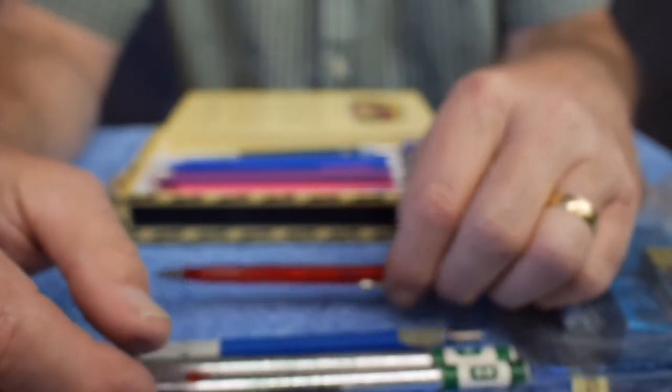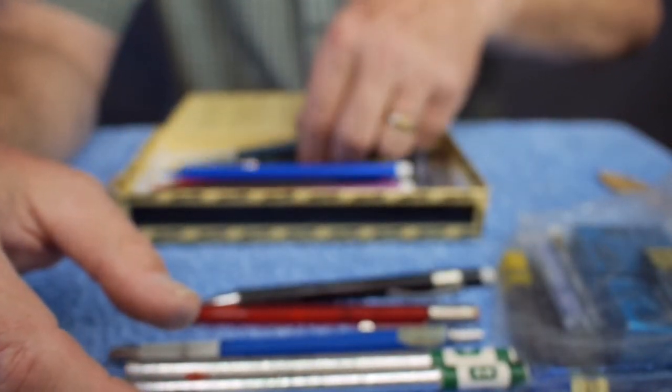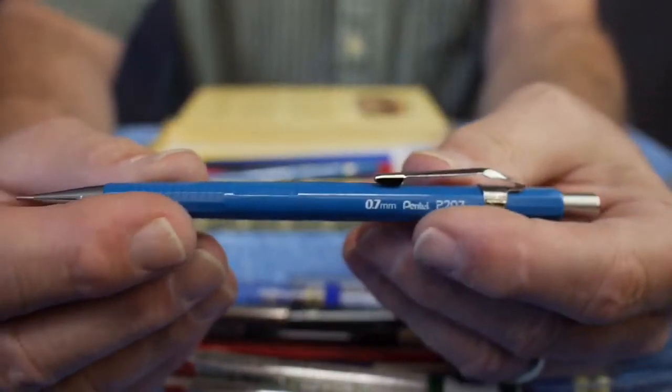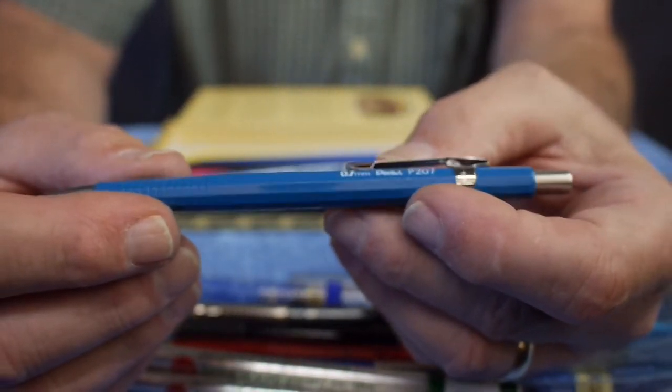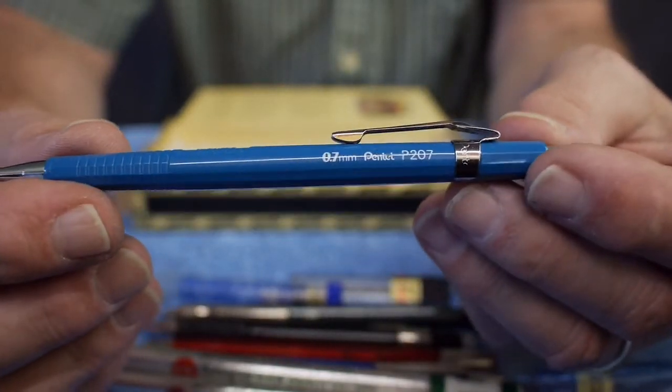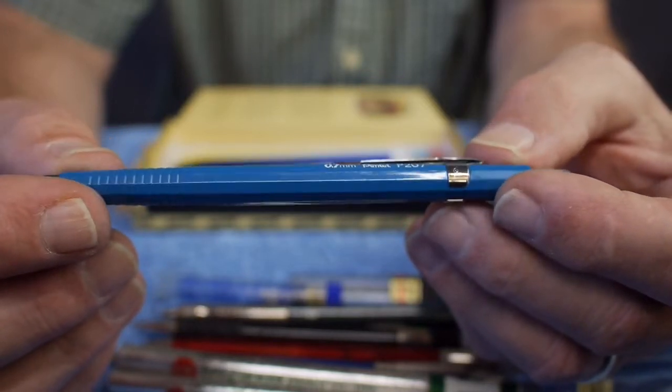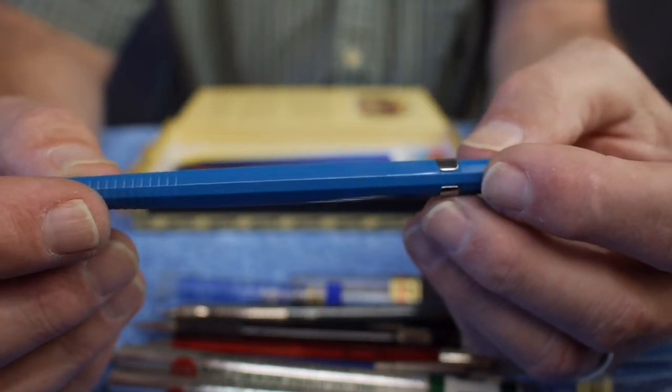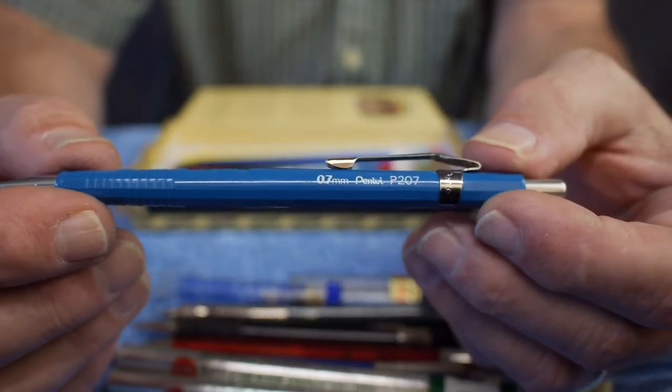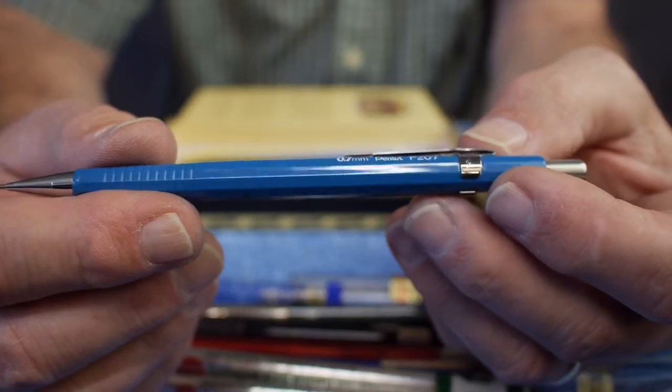Sometime a few years later, I discovered 0.7 millimeter leads. I thought for many years that I was a 0.5 millimeter mechanical pencil guy. And then, for some reason, I was at an office supply store and I saw these blue 0.7 millimeter pencils, Pentels, a P207, classic pencil. And I decided, you know what, I'm going to try getting one of these 0.7s and some leads and see if I like it. And you know what happened?